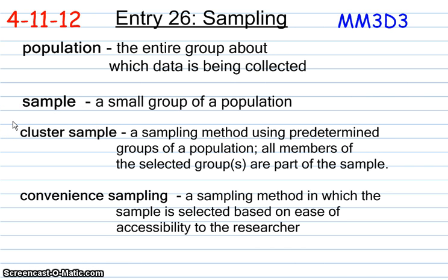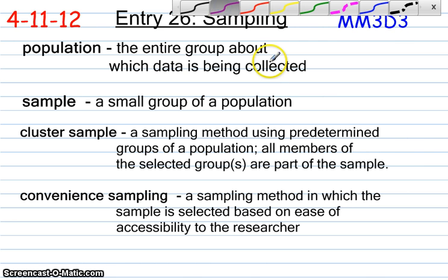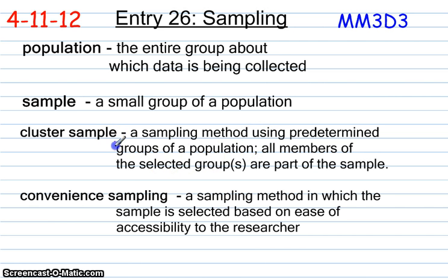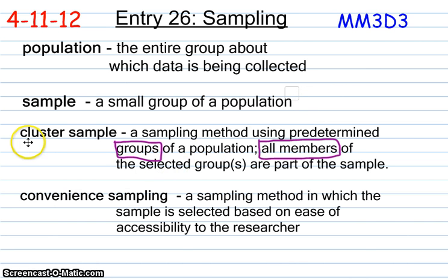There are five different types of sampling we're going to cover here. First off, we have cluster sampling. Cluster sampling is a sampling method using predetermined groups of a population. The key term here is group — any time it says group, cluster samples should automatically come to mind. All members of the group will be included in the survey, so if it says all members of a group, we're talking cluster.